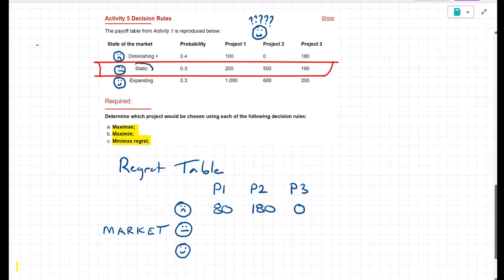If the market turns out to be static, the best choice would be project two earning 500. So if we chose project two and the market were static, we'd have no loss. Project one, we'd say to ourselves, shucks, we could have earned 500. But we chose project one, we're only earning 200. So we missed out on 300.